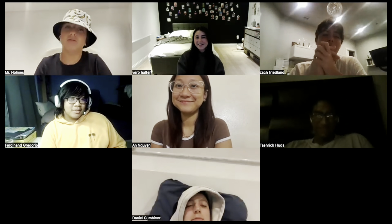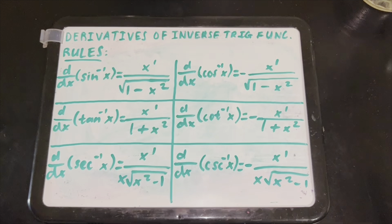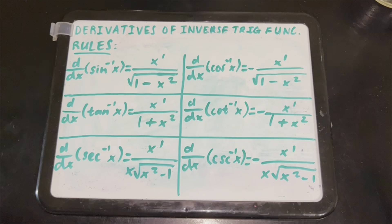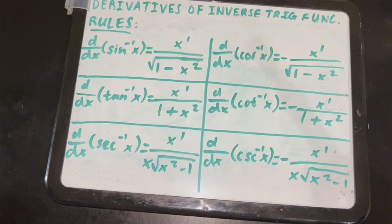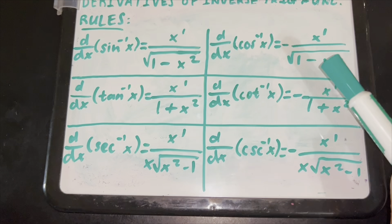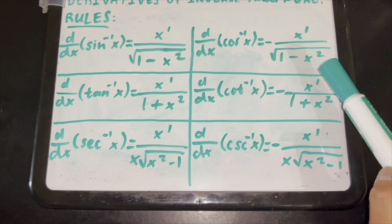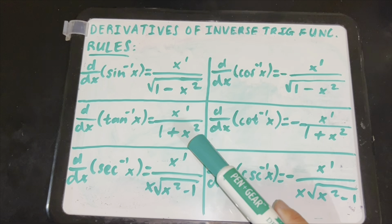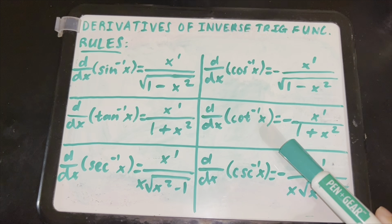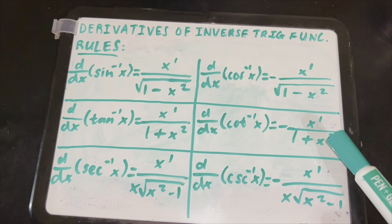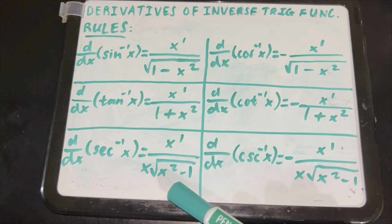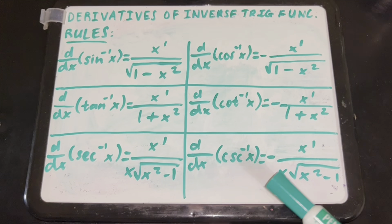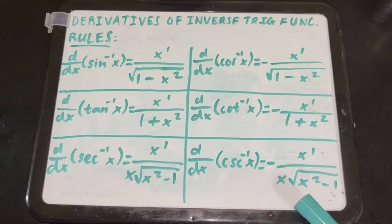Okay, good — it was good, but you don't need to clap so much. Okay, next. Hi guys, today we're learning about the derivatives of inverse trig functions. To do these problems, you need to know these rules. For arcsine, it is x prime over the square root of 1 minus x squared. For arccosine, it is negative x prime over the square root of 1 minus x squared. For arcsecant, it is x prime over x times the square root of x squared minus 1.